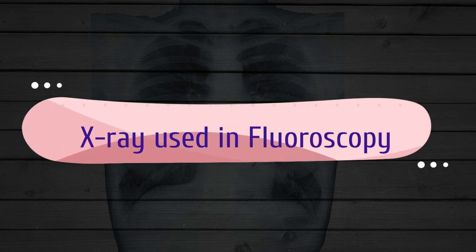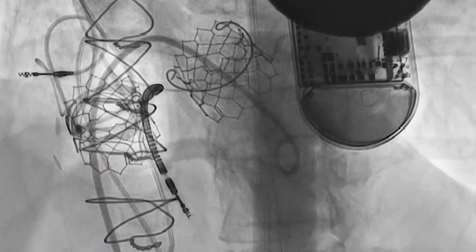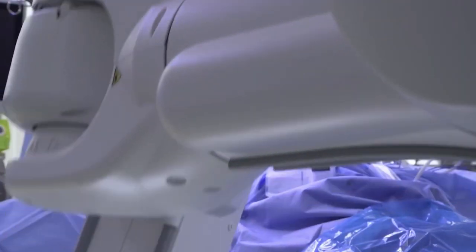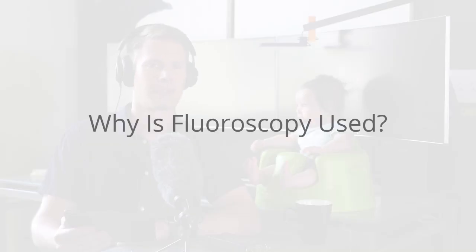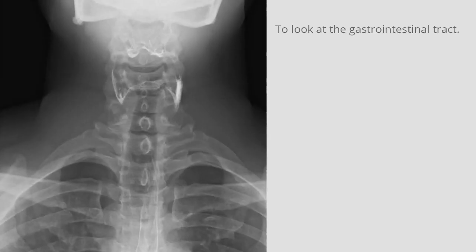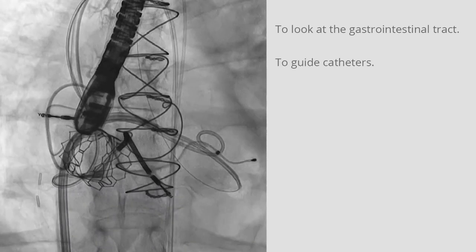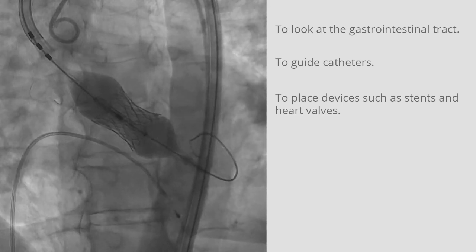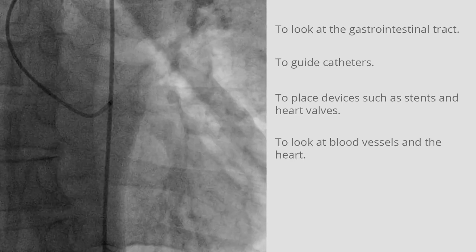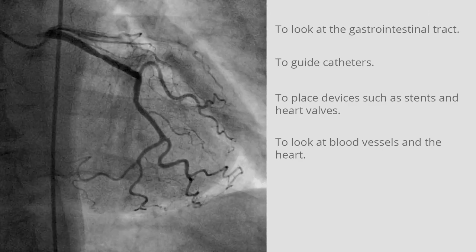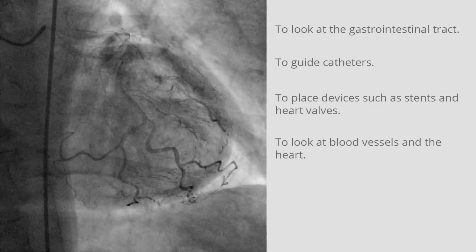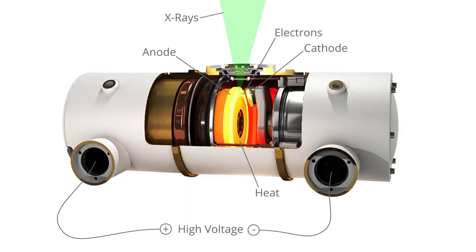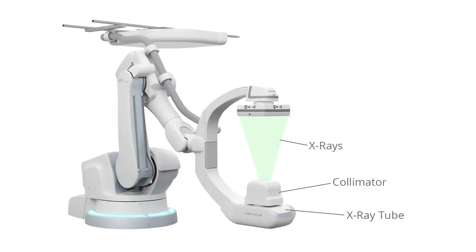Fluoroscopy: fluoroscopy produces real-time images of continuous movement within the body, shown on a fluorescent screen and recorded for analysis at a later time. It shows a live image of the patient's internal structures and can follow the path of an injected contrast substance. A fluoroscopy test depicts real-time images of a beating heart or the blood flow to the muscles of the heart. It is also used to position a pacemaker or catheter, orthopedic implants during a surgical procedure, or to view contrast agents — including use during a barium enema to view movement through the gastrointestinal tract.